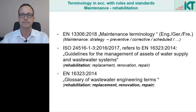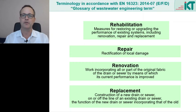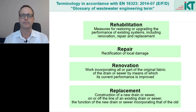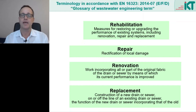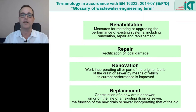The definitions of the individual rehabilitation methods are as follows. Repair is defined as the rectification of local damage — the asset, which is the sewer section between two manholes, remains basically unchanged; only a local defect is repaired. Renovation is defined as work incorporating all or part of the original fabric of the drain or sewer, by means of which its current performance is improved. And by replacement we mean the construction of a new drain or sewer on or off the line of an existing drain or sewer, the function of the new drain or sewer incorporating that of the old.